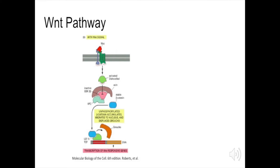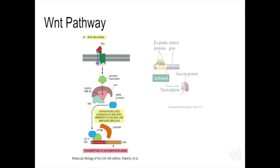In more detail: Wnt binds to the transmembrane protein frizzled and activates disheveled. Disheveled inhibits GSK3-beta, which is part of the destruction complex, and stabilizes beta-catenin. Beta-catenin migrates into the nucleus, and TCF3 with beta-catenin removes Groucho and activates transcription of genes such as Siamois. The Siamois transcription factors help define the Nieuwkoop Center and are involved in the induction of the Spemann organizer.